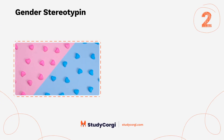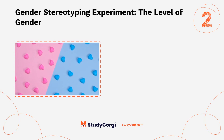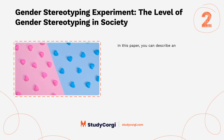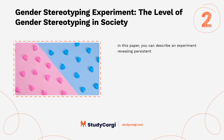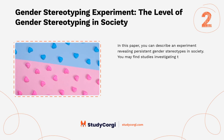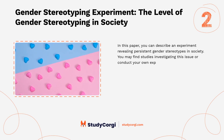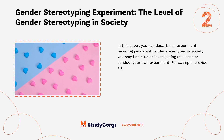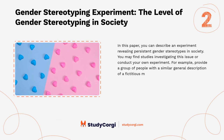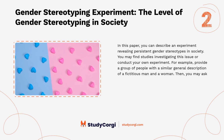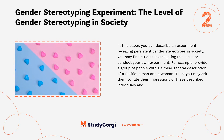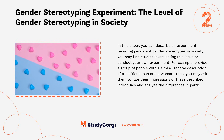Gender stereotyping experiment: the level of gender stereotyping in society. In this paper, you can describe an experiment revealing persistent gender stereotypes in society. You may find studies investigating this issue or conduct your own experiment — for example, provide a group of people with a similar general description of a fictitious man and a woman, then ask them to rate their impressions of these described individuals and analyze the differences in participants' attitudes.